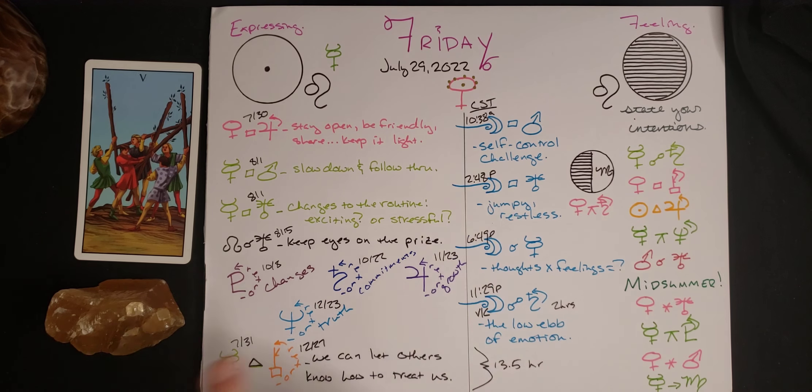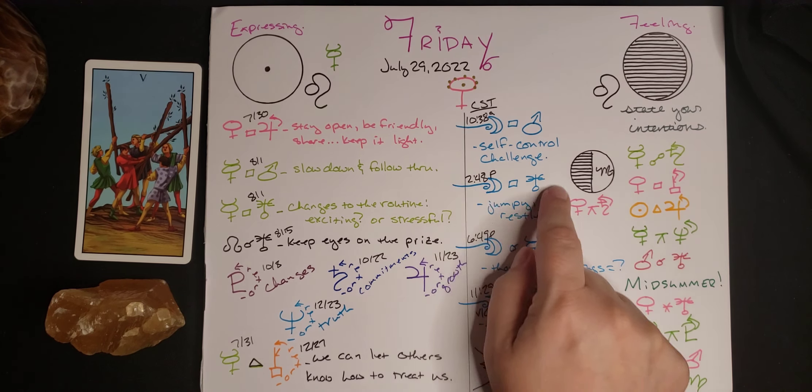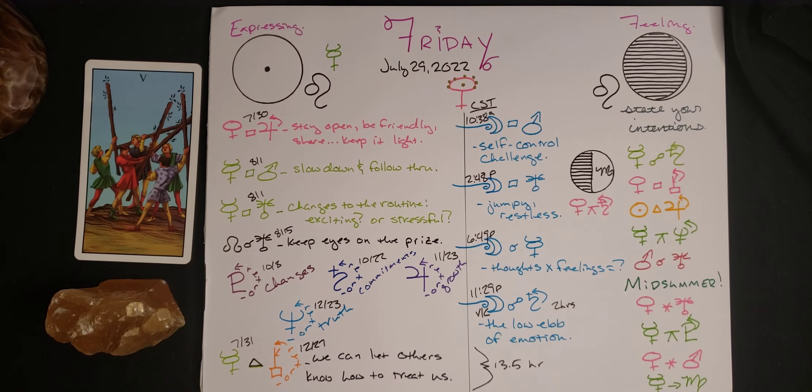And then this afternoon moon goes square to Uranus. That's another kind of difficult vibe where we might just feel sort of excitable, jumpy, restless. We might be looking for some stimulation at this time. And again, we have to be careful about how we're going to behave in response to that feeling.